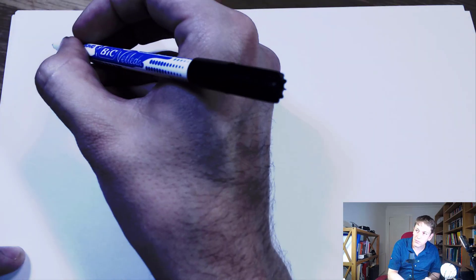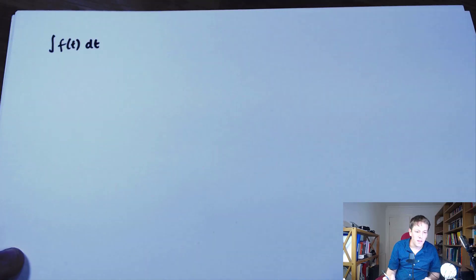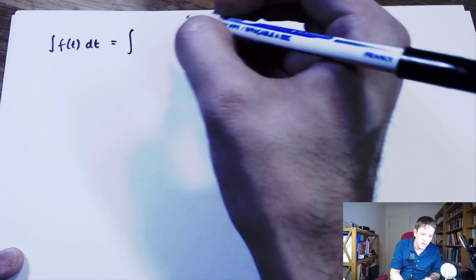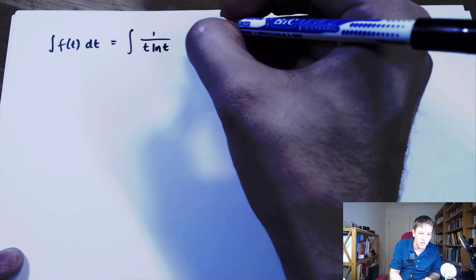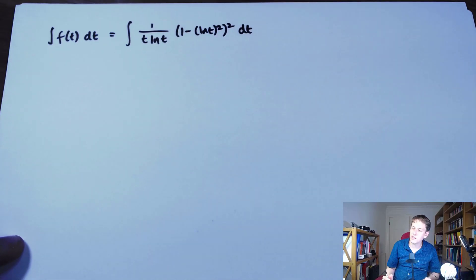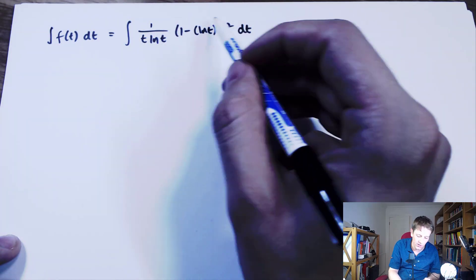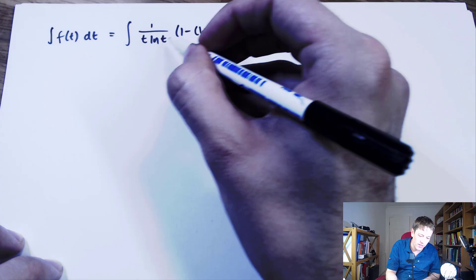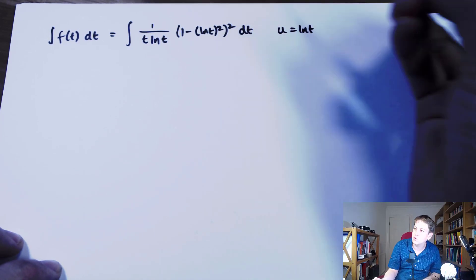Since both integrals are the same integrand, I'll forget the limits for a moment and work out ∫ f(t) dt. I'm writing t now for notational correctness. So the integral is ∫ (1 − log²t)² / (t·log t) dt. It looks like we want a substitution. Various things you could try — log²t or the whole factor — but try simpler substitutions first. I notice log t differentiates to 1/t and there's a 1/t here, so let's substitute u = log t.